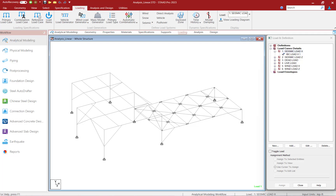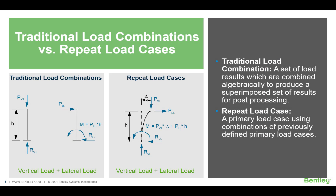The next topic we're going to discuss is the type of load combinations that are available within STAAD Pro. In STAAD Pro, you can generate two different types of load combinations. The first type is a traditional load combination — a load combination that will include a set of load results combined algebraically to produce a superimposed set of results for post-processing. In a traditional load combination, STAAD Pro will calculate the results of each load case individually. It's important to note that traditional load combinations are only appropriate for a linear elastic analysis.